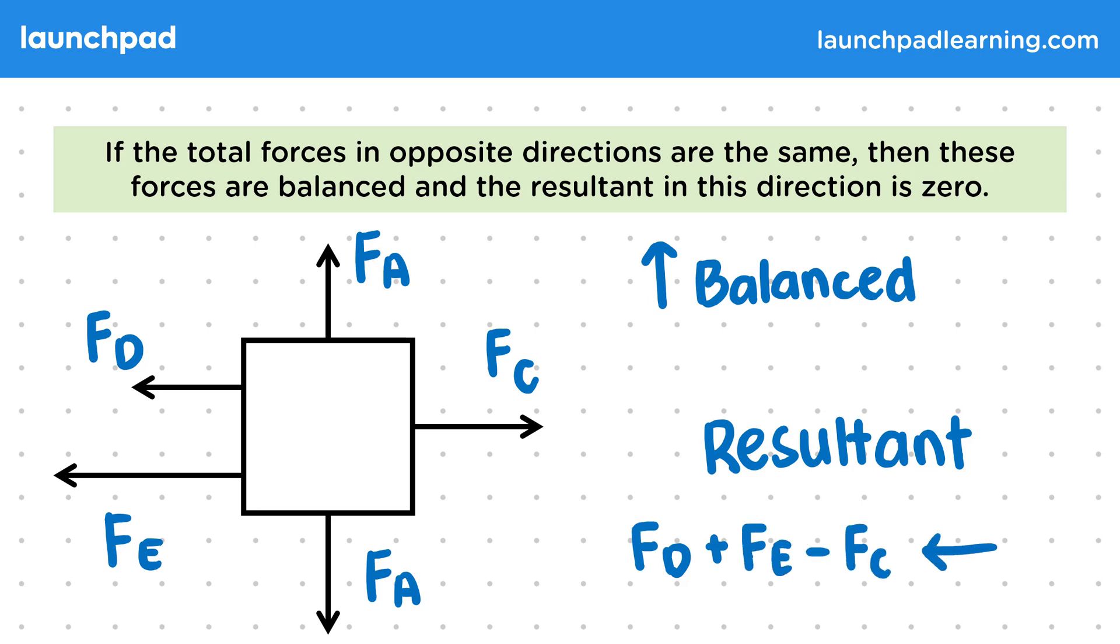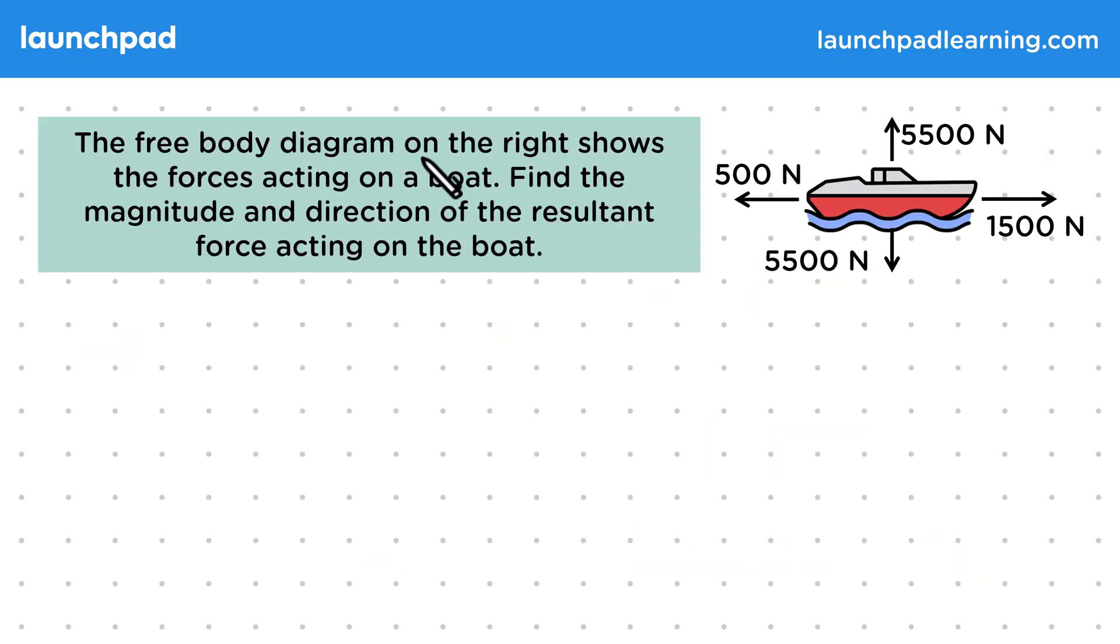Let's have a look at another example. The free body diagram on the right shows the forces acting on a boat. Find the magnitude and direction of the resultant force acting on the boat. So in the diagram, we can see the driving force acting forwards and the drag opposing. Then we have the weight acting downwards and upthrust acting in the opposite direction.